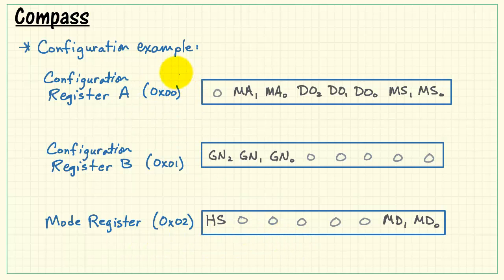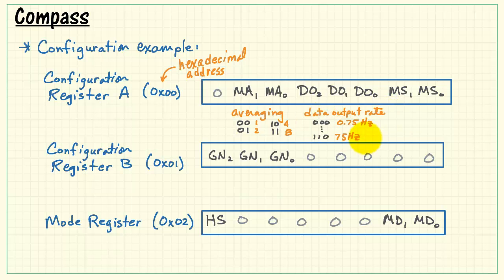Now the Honeywell part has three registers, configuration registers A and B, and then a mode register. Here I'm indicating the hexadecimal address, and then also showing the bit fields for each one of these registers. This bit field is associated with averaging. You can average one, two, four, or eight samples per output. These three bits indicate the data output rate, ranging from 0.75 Hz up to 75 Hz.